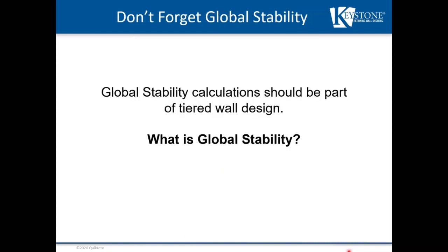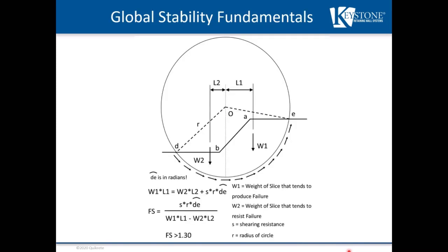Global stability calculations — don't forget them. They should be a part of all tiered wall designs. But what is global stability? Global stability calculations attempt to estimate the critical failure surface of a slope and determine the stability factor of safety. To evaluate global stability, a failure surface is estimated, usually defined by a circle for simplicity, and the slope is divided into slices.